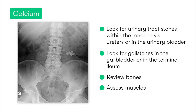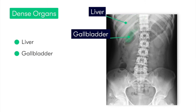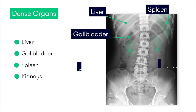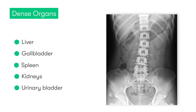As well as stones, we should also assess the bony structures and the muscles visible on abdominal X-rays to ensure we don't miss any obvious injuries or significant pathology. Moving on to D for dense structures, we want to assess the more solid intra-abdominal organs including the liver, gallbladder, spleen, kidneys, and urinary bladder. Typically we wouldn't expect to see these in great detail, but in rare instances we may identify issues such as hepatomegaly, splenomegaly, or a grossly distended urinary bladder in urinary tract obstruction.